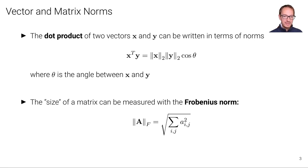And the size of a matrix can also be measured, and one common measure for the size of a matrix is the Frobenius norm, which you can think of as the straightforward extension of the L2 vector norm to matrices. We write this with the F subscript, and it's simply the square root of the sum of squares of all individual elements of the matrix A.